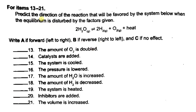For items 13 to 21, predict the direction of the reaction that will be favored by the system below when the equilibrium is disturbed by the factors given: 2H₂O forming 2H₂ plus O₂ plus heat. Write A if forward (left to right), B if reverse (right to left), and C if no effect.